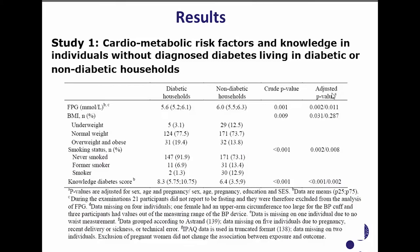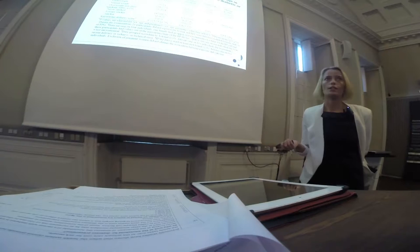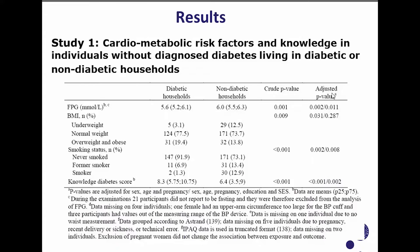In sub-study one, comparing cardiometabolic risk factors and knowledge in individuals without diagnosed diabetes living in diabetic versus non-diabetic households, we saw that fasting plasma glucose was lower in diabetic households — and no people with diagnosed type 2 diabetes were included in this analysis. We also saw a high number of underweight people in non-diabetic households. Smoking prevalence was lower in diabetic households, and people living in diabetic households had a much higher diabetes knowledge score. All these differences were statistically significant.